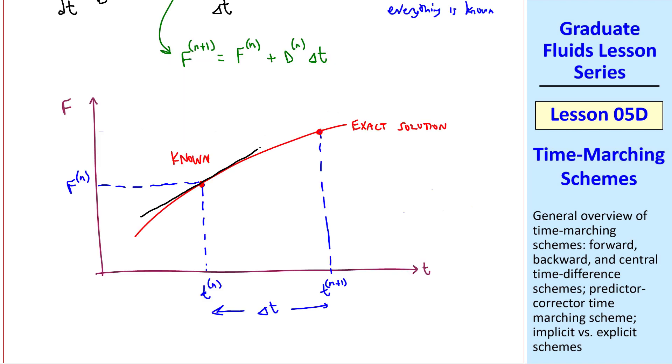Graphically, we're calculating the slope at this location, tn, and then we extrapolate that to get our predicted point, the predicted fn plus 1. Since this exact solution is not linear, this prediction is not very accurate. Of course, as delta t gets very small, the error decreases.